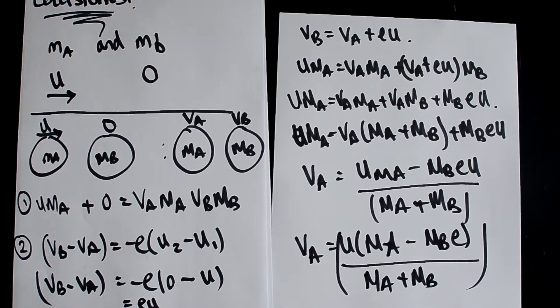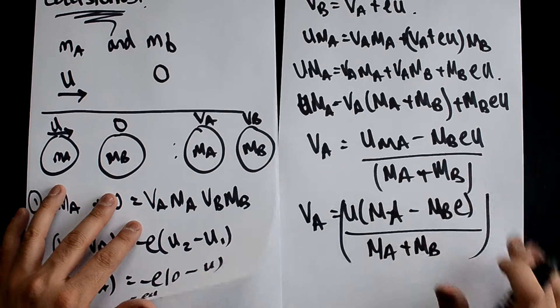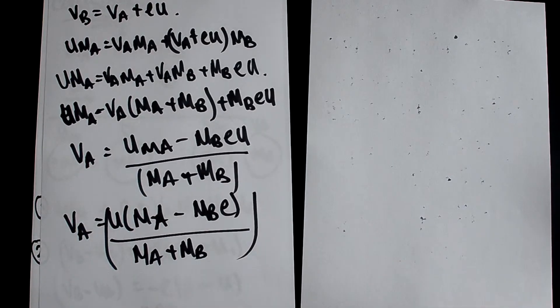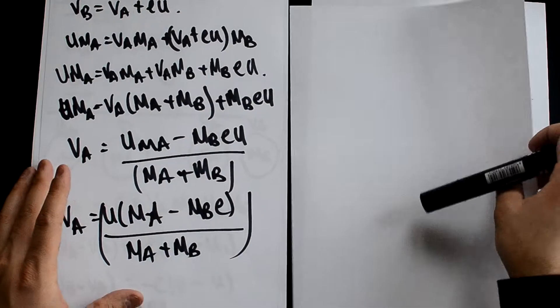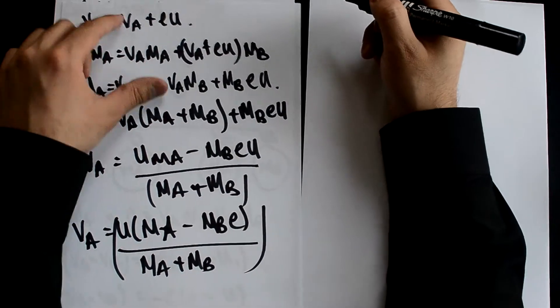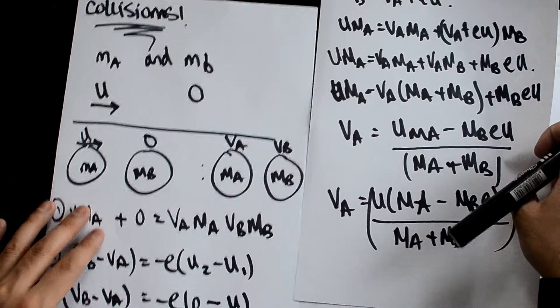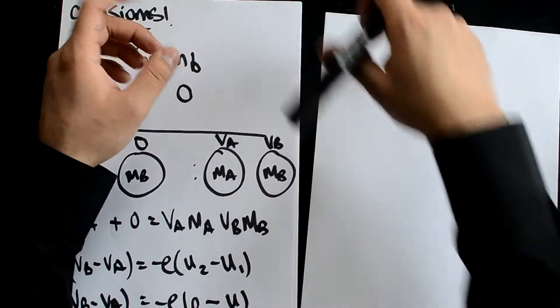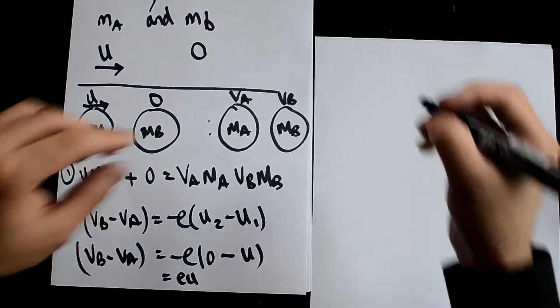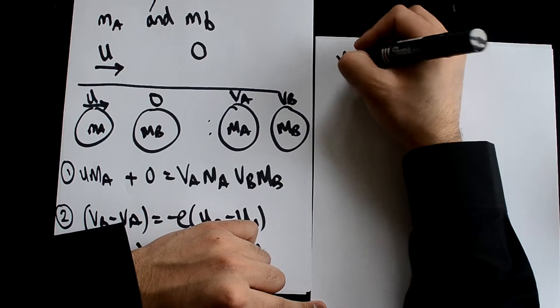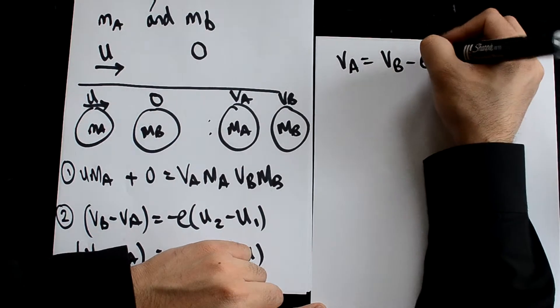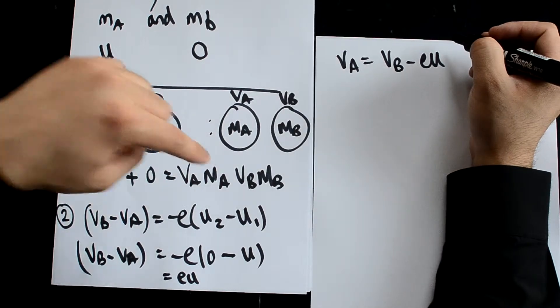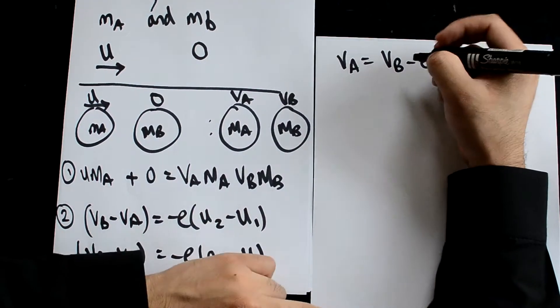There we go, that is one of the velocities we found. Now the next step is trying to find what the value of vb is. Let's rearrange this equation. You can rewind or pause if you want to see how I calculated va again. Let's now find vb. So va equals vb minus eu, and we plug this equation into our conservation of momentum.